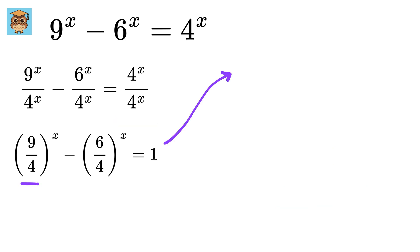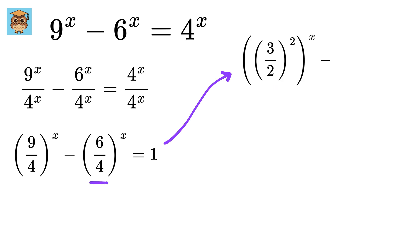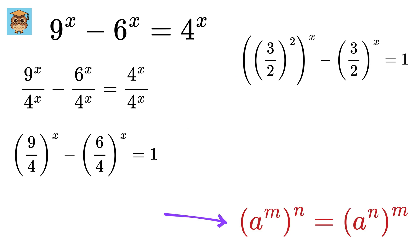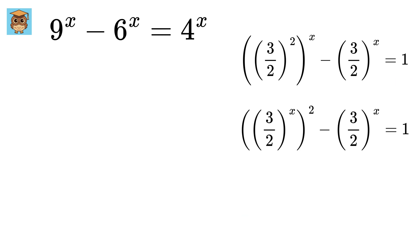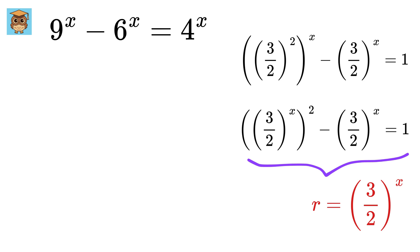Then we can write this 9 by 4 as 3 by 2 whole square, and then this 6 by 4 as 3 over 2. Then we can use this power rule. So this will become 3 by 2 raised to x whole square minus 3 by 2 to the x equals 1. We will now use substitution, where we will call r as 3 by 2 raised to x. So this will become r squared minus r equals 1.